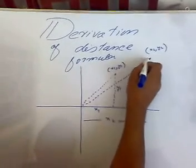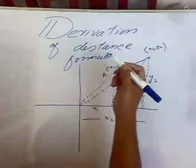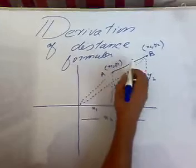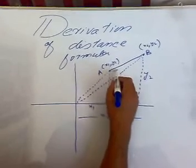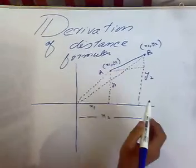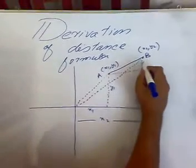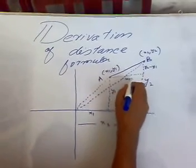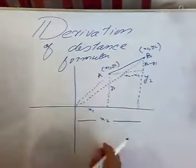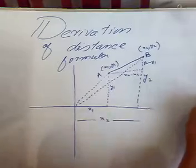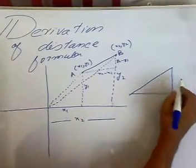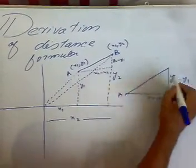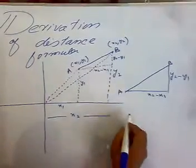We need to find the distance between the two points, which we name A and B. We can see that we can form a right angle triangle. This distance here will be y2 minus y1, and this distance over here will be x2 minus x1. So we now have a right angle triangle. Drawing it separately: this side is y2 minus y1, this side is x2 minus x1, and these are points A and B.